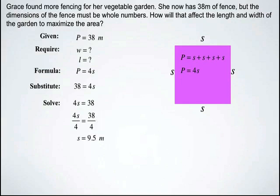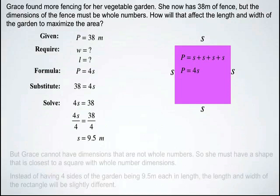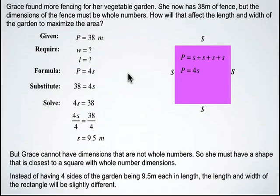But Grace, in this situation, has required that her dimensions can only be whole numbers. So we need to figure out what shape, or what are we going to do with the dimensions in order to get it still as close to a square as possible, but get her into whole numbers. So instead of having 4 sides of the garden being 9.5 each, we need to change the length and width just ever so slightly in order to get her some whole numbers.